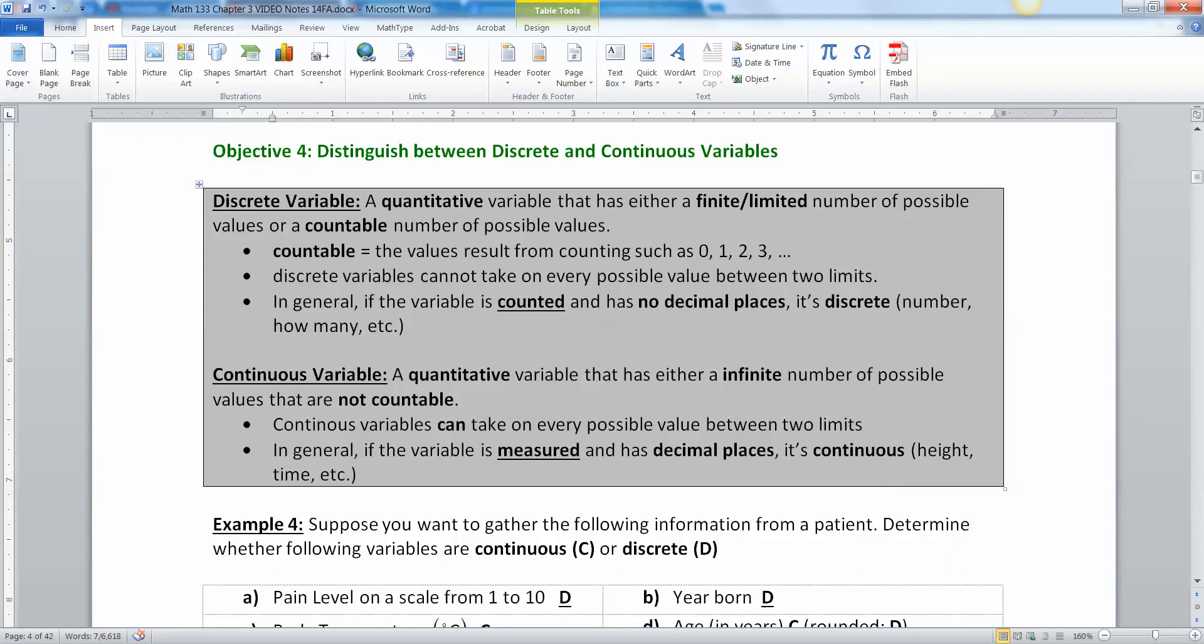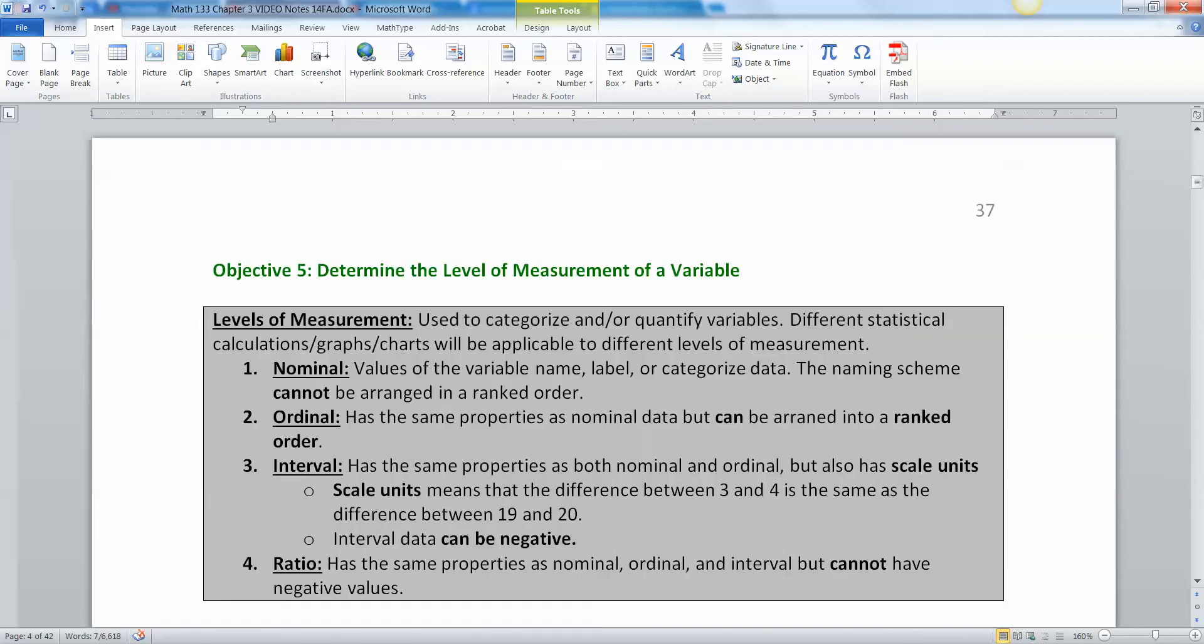Continuous variables could be anything on the scale as long as you could just get a finer tune measurement, you could get more decimal places if you will. So for example, if you're thinking about weight, weight is continuous because even though you get on the scale and it says 110, it's really 110.2365.